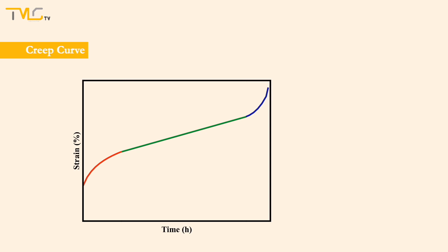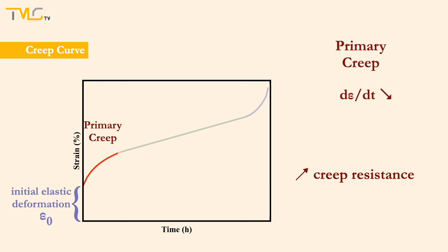When examining a typical constant load creep curve, as the load is applied, we see an instantaneous deformation denoted as ε0 that is mostly elastic. After the instantaneous strain, primary creep begins, where the creep rate is continuously decreasing. During the primary creep stage, the material experiences an increase in creep resistance as a result of increased strain hardening.